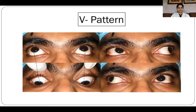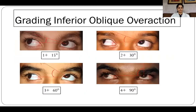V pattern is considered to be significant if there is a difference of 15 prism diopters between upgaze and downgaze measurements. The inferior oblique overaction manifests as over-elevation of the eye in adduction and is seen in 70% of patients with exotropia. The amount of inferior oblique overaction is defined as the angle formed by the intersection between a horizontal line and the tangent line which corresponds to the direction of ocular movement.